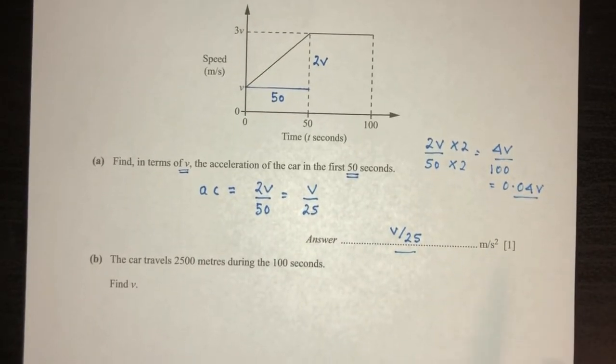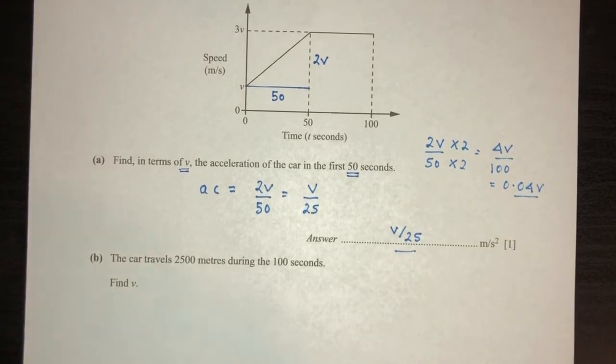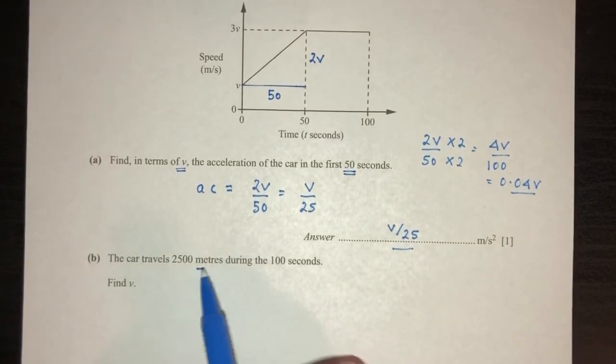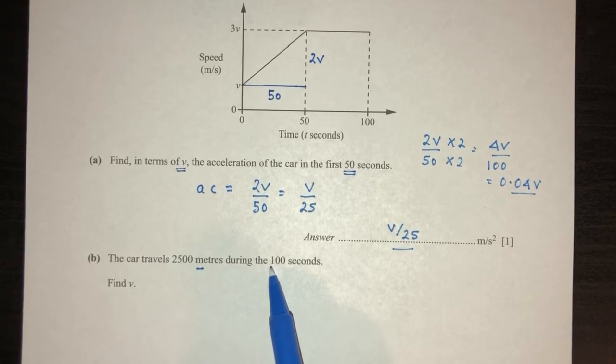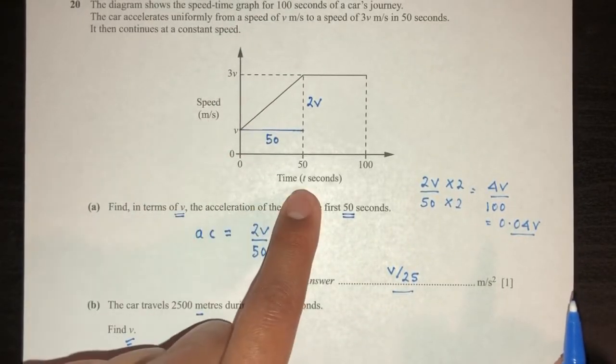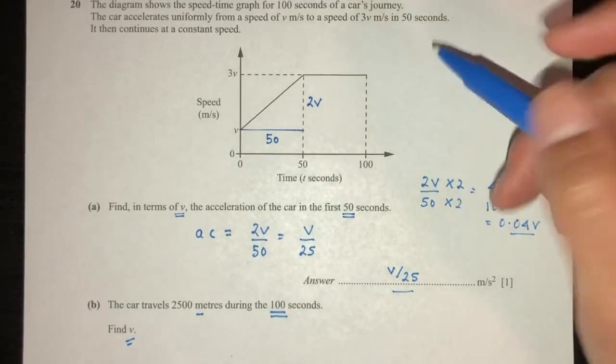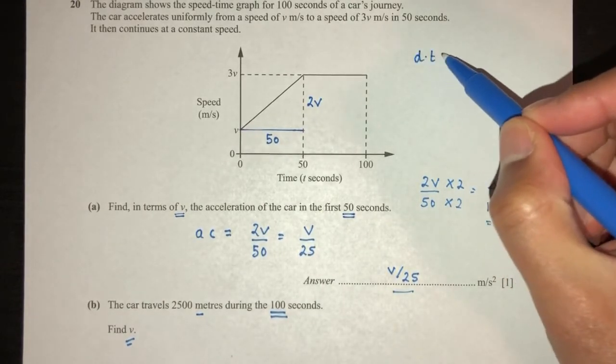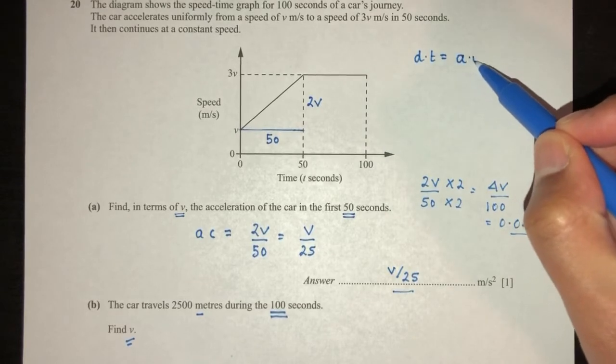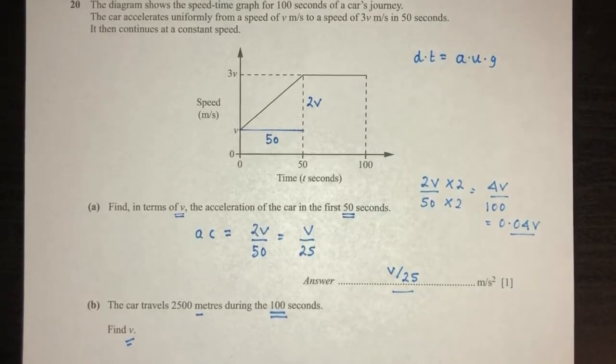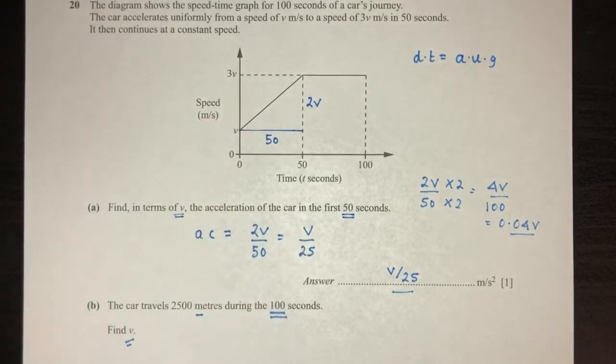Now, for part B, the car travels 2500 meters during the 100 seconds. Find the value of V. So we have to use this information to find the value of V. Whenever you are given a speed time graph, you have to know that the distance traveled is equal to area under graph. That's the most important thing we need to know when working with speed time graph.